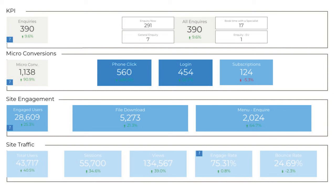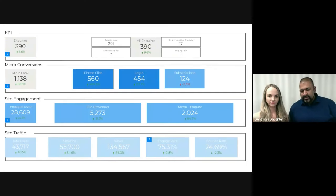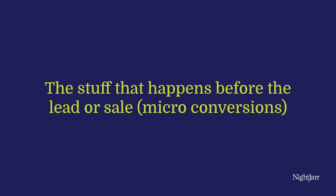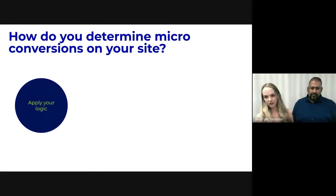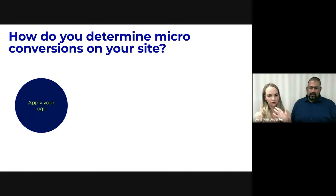I just want to add that the funnel doesn't necessarily have to have fewer steps as you go up. Between the bottom step and the second bottom step there are only two for site engagement. So it's not necessarily a funnel in terms of building blocks — it's just a visualization to show there's a step in between that you need to get through. Going into the stuff that happens before a lead or a sale — the fancy name is micro conversion — how do we determine what a micro conversion is on your site? We apply our logic. It's easy; it just requires a bit of focused time. Don't overthink it.